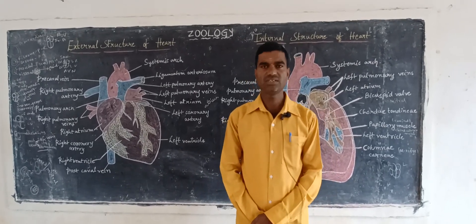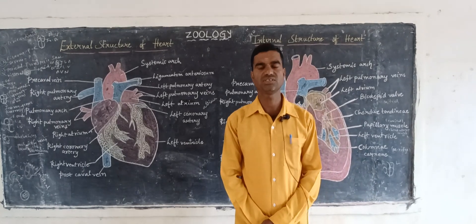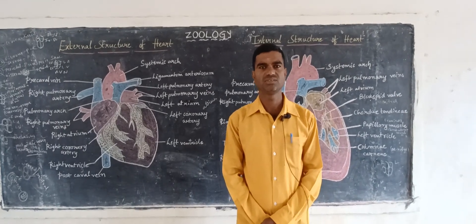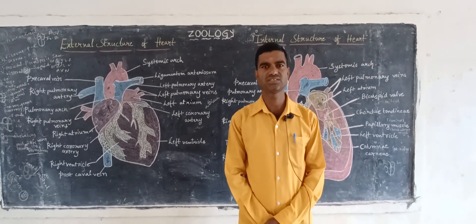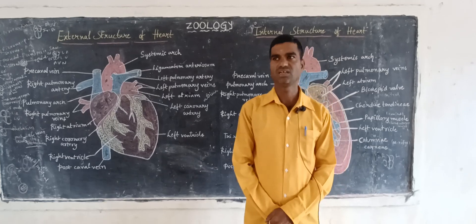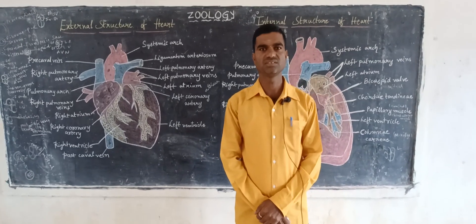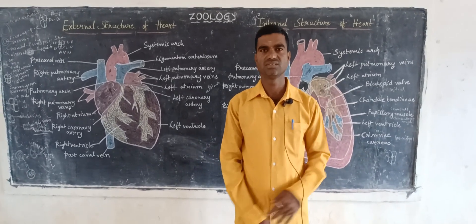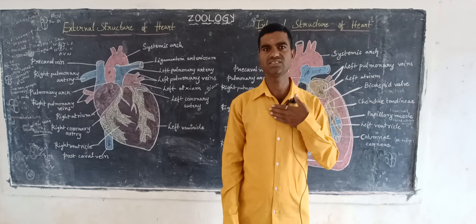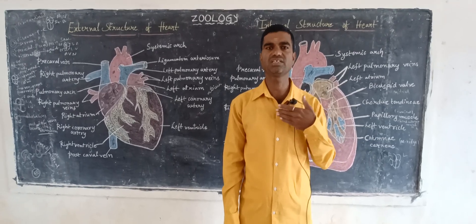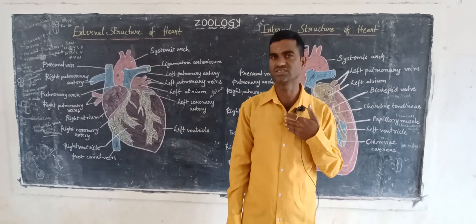The human heart is mainly four-chambered; two atria and two ventricles are present. The heart is located in the mediastinum, which is the thoracic region. In this thoracic region, slightly to the left side, the heart is present.